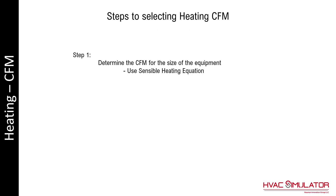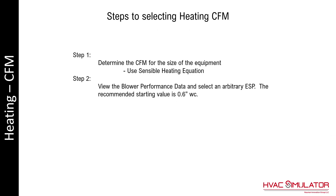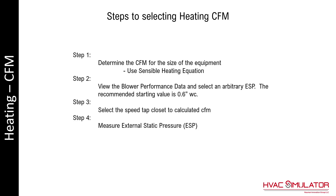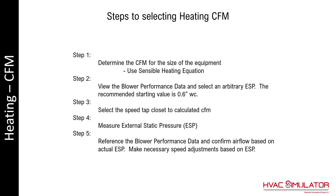Just like cooling, there are steps to selecting heating CFM. Step 1 is to determine the CFM using the sensible heat equation — 639 CFM for a 40,000 BTU furnace. View the blower performance data and select an arbitrary ESP; the recommended starting value is 0.6 inches of water column. Select the speed tap closest to the calculated CFM. Measure the external static pressure, then reference the blower performance data and confirm airflow, making necessary adjustments based on external static pressure.